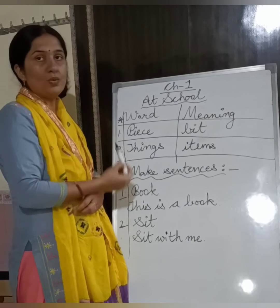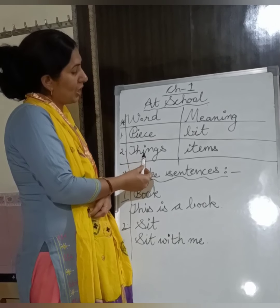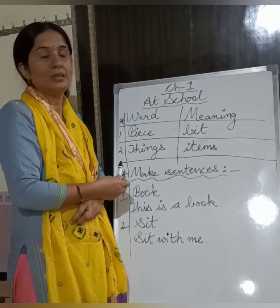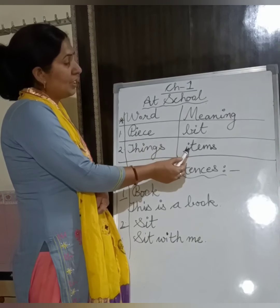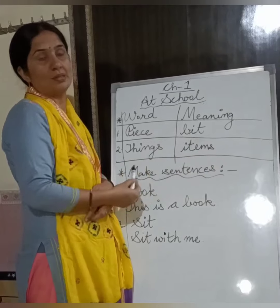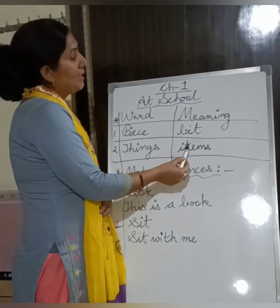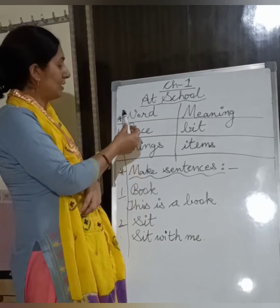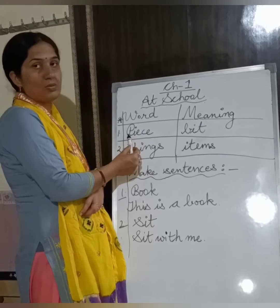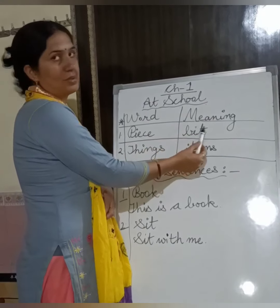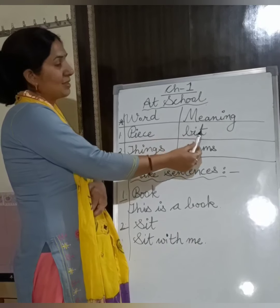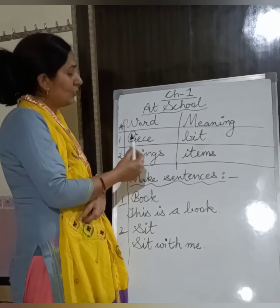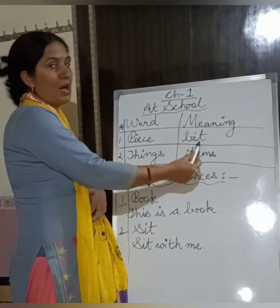Second word is T-H-I-N-G-S, things. Things kya hoti hai — cheizein. And their meaning in English is items — I-T-E-M-S, items. So, let us recall once again: first word is piece — piece, bit. Aap iske saamne likhenge iska word ka meaning. Second word, things — items.